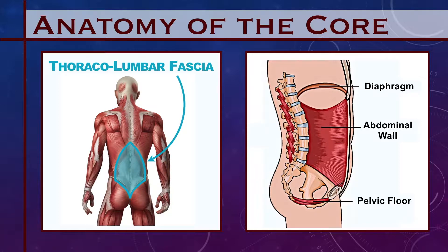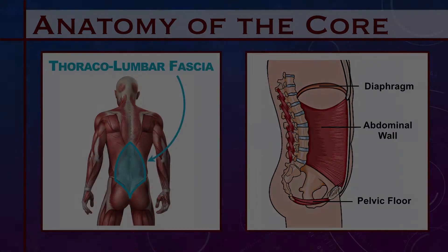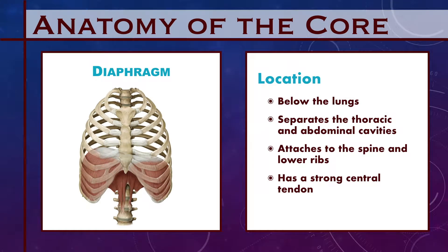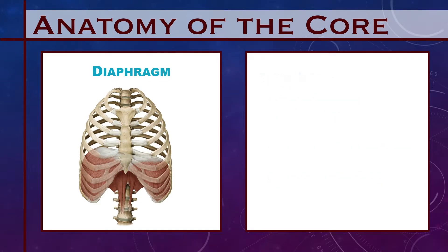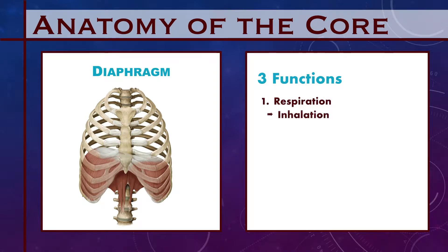As you will see later, the thoracolumbar fascia plays a key role in spinal stabilization. We will now move on to what is the most overlooked component of the core: the diaphragm. The diaphragm sits below the lungs, separating the thoracic and abdominal cavities. It is a strong muscle that attaches to the spine and lower ribs at the bottom and has a large central tendon at the top. The diaphragm has three functions. Most people know that the diaphragm functions during respiration, allowing us to inhale.